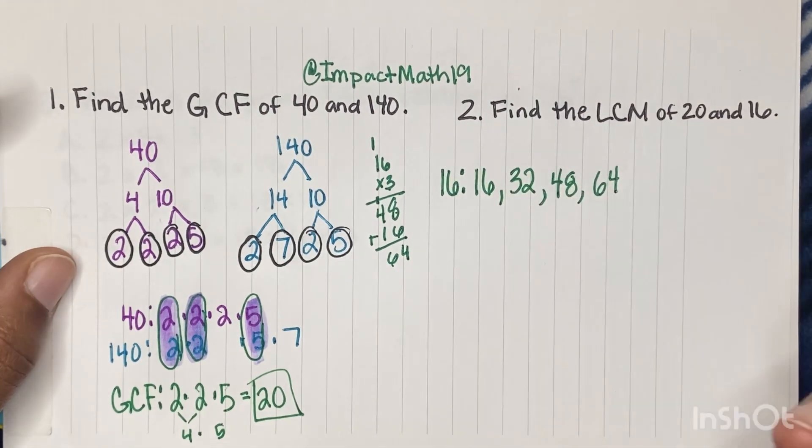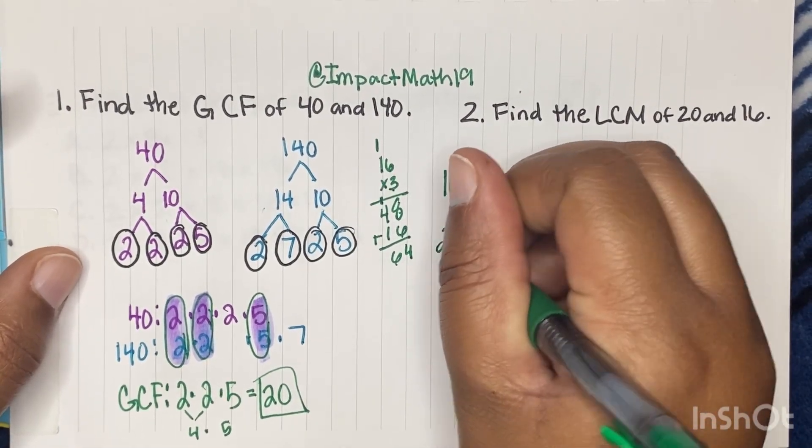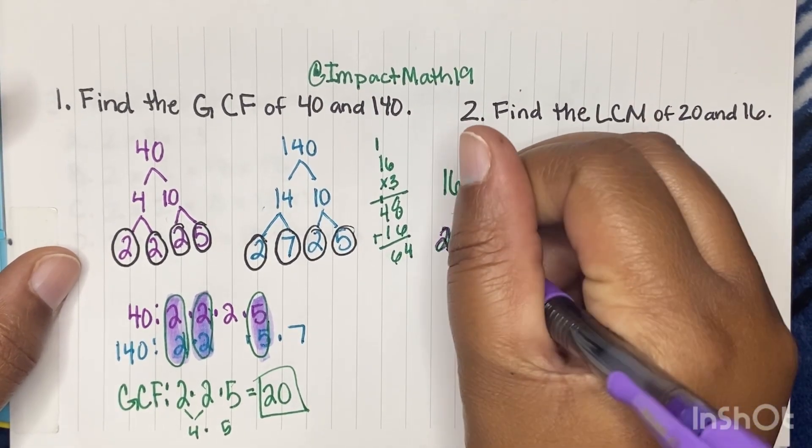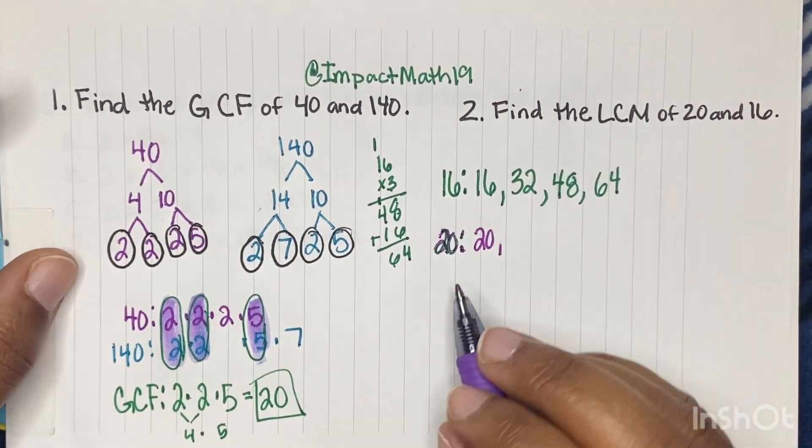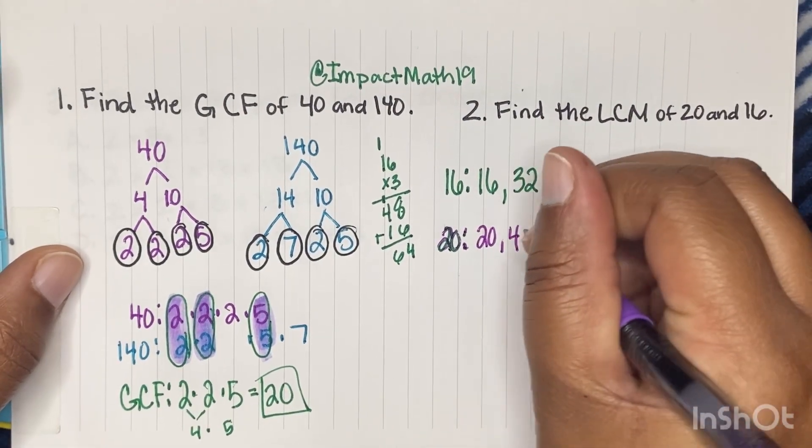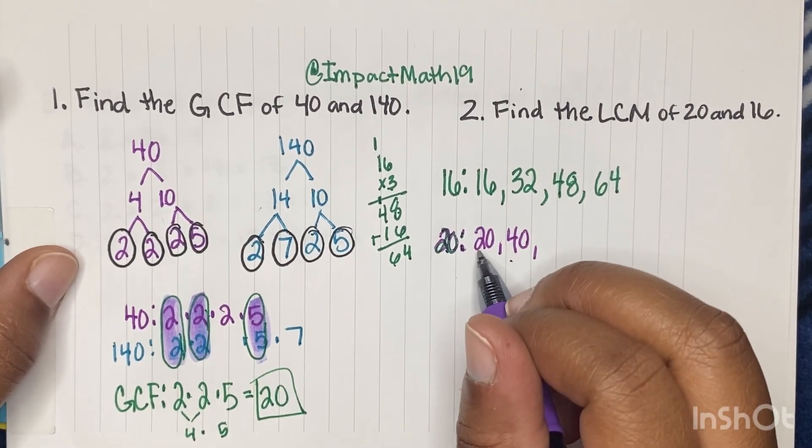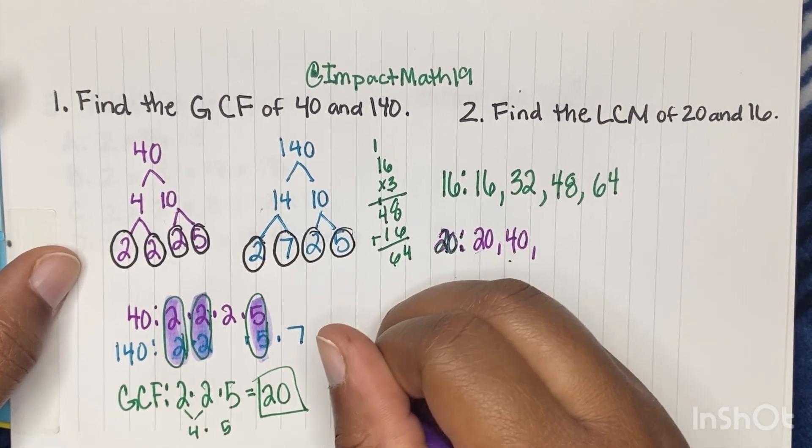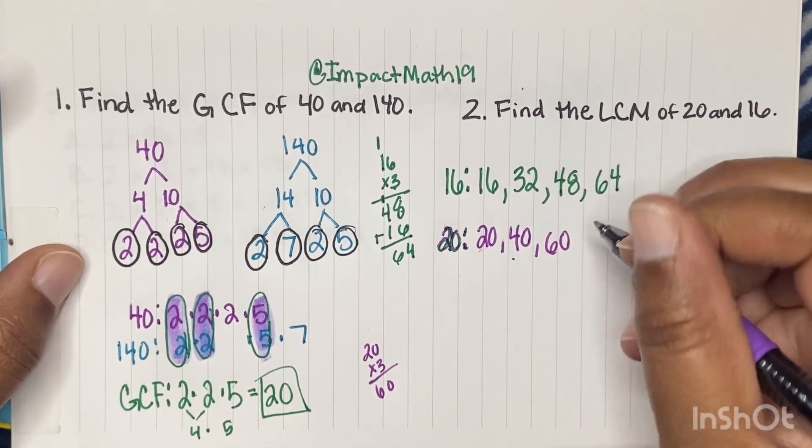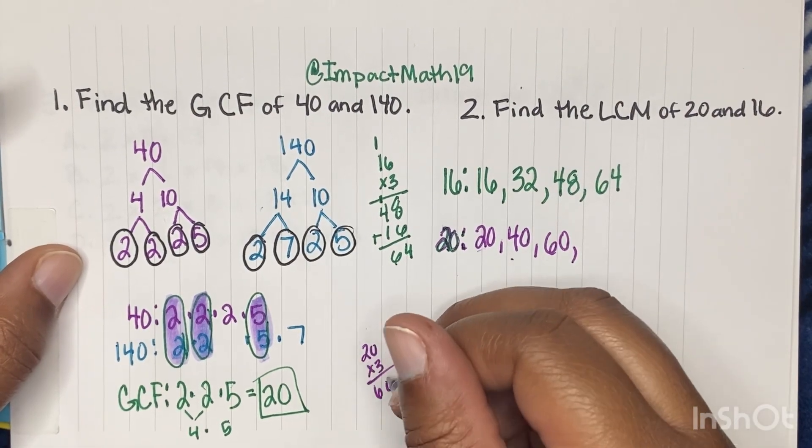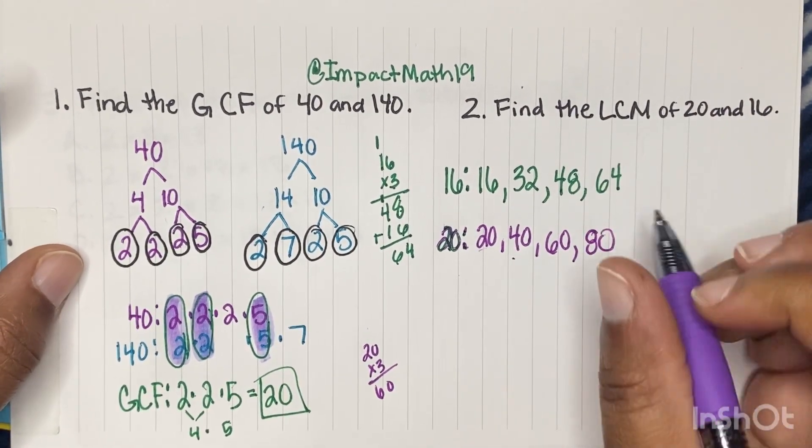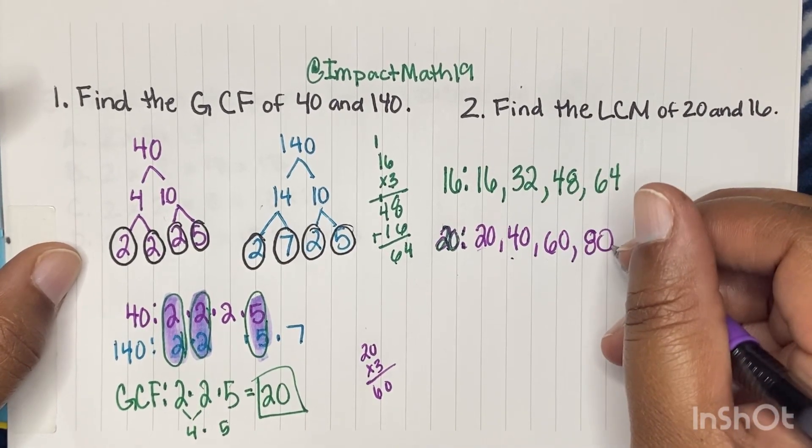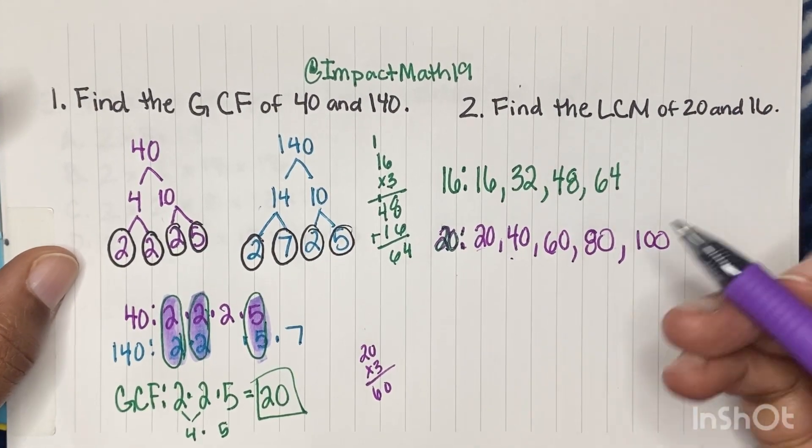Alright. So let's do 20. So the first multiple of 20, let's do it in a different color, would be 20. The second multiple would be 40. The third multiple, so 20 times 3, would be 60. The fourth multiple would be 80. And then the fifth multiple, if we add another 20, would give us 100.